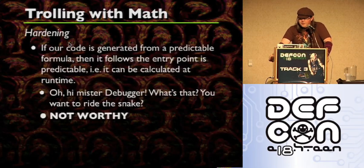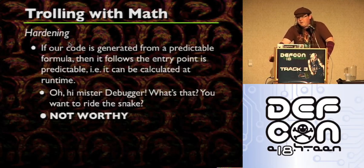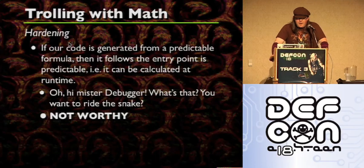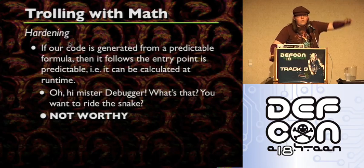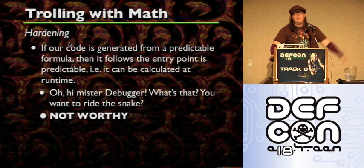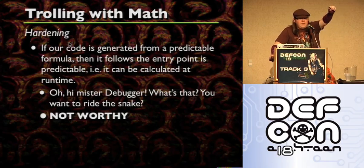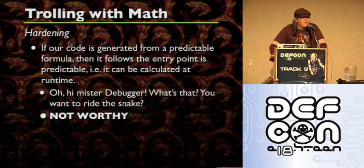If your code is generated from a predictable formula, then it also follows that the entry point is predictable. So you can take this one level further before you actually get to your code. You can essentially obfuscate the entry point in some way or another — do a whole 300 assembly instructions that just gets the entry point. By the way, here's a little bit of anti-debug that manipulates the entry point just so much that you can't even run the code. There's all sorts of stuff you can do there too.